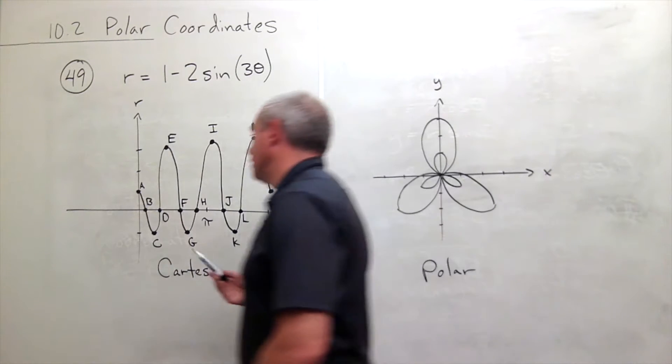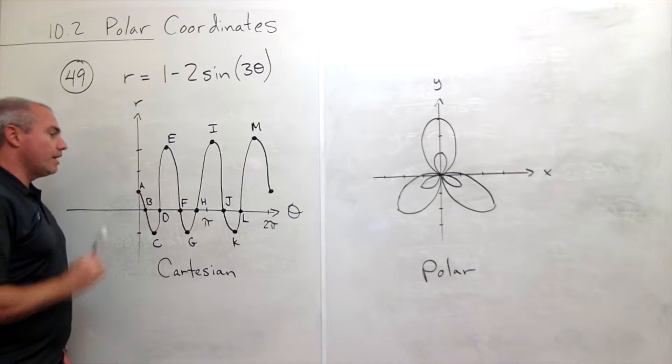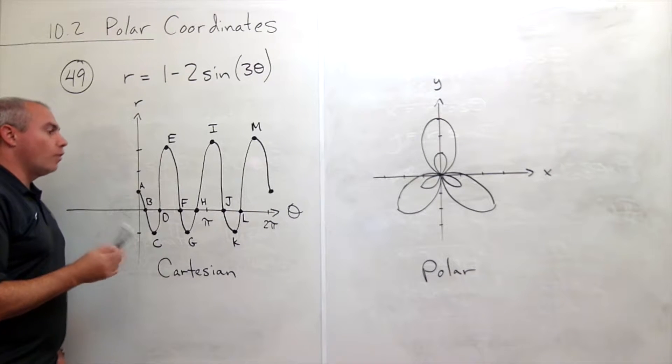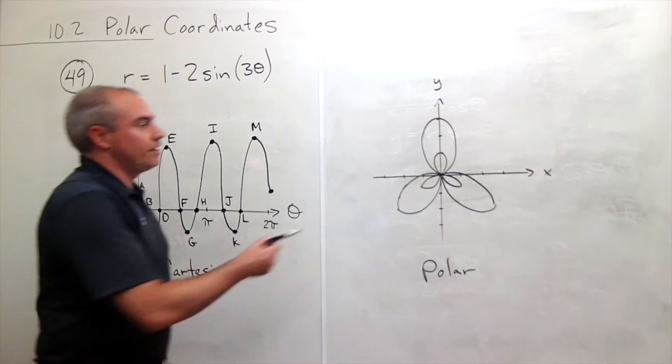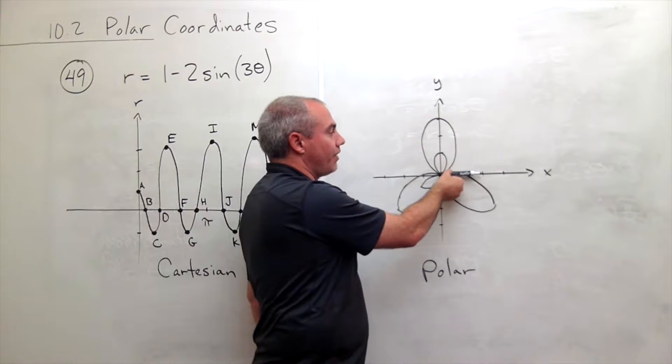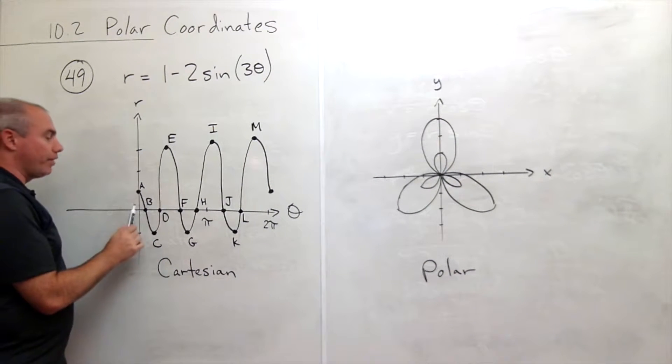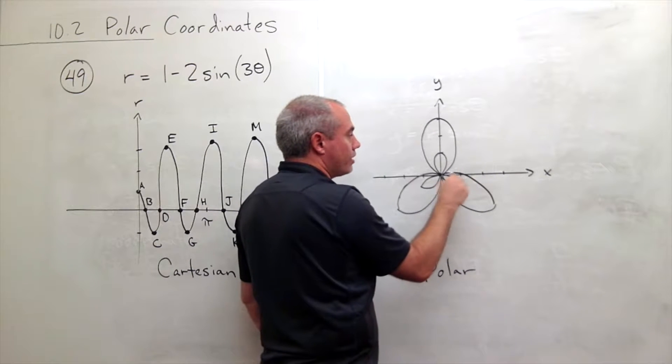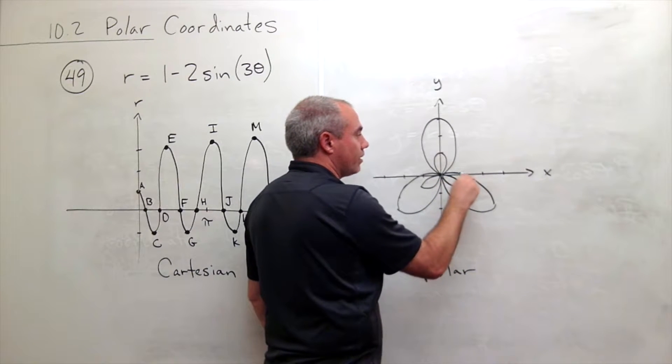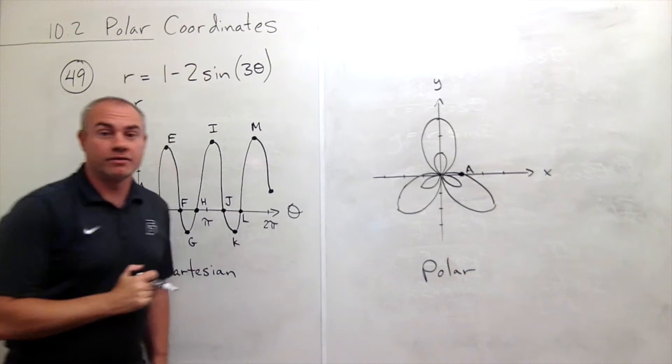Let's start out looking at the very first point, point A. Now point A, what's going on here? Well, what is theta? Theta is 0, so that means I'm pointing in the theta equals 0 direction. And how far out do I go on the curve? I go out 1, so r is 1. So if I'm at a theta of 0 and r is 1, then I'm sitting right here on the curve. So I'm going to label that guy. That's my A value.